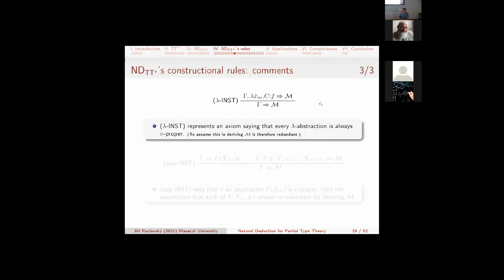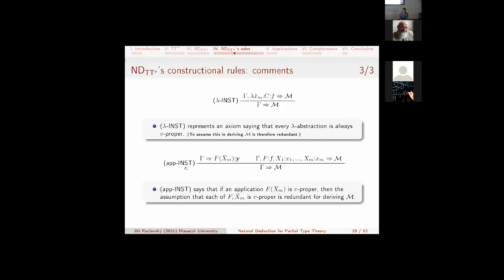Now let me focus on so-called instantaneous rules, which again express something which is already known from our description of constructions. From this semantic behavior, so to speak. Each lambda abstract is proper. This is what a match of the sort says. And so this assumption is redundant. Something similar is involved in the rule expressing in situation of applications. Namely, if you have an application which is proper, then it entails that each component is proper. So again, this is redundant in entailing M.